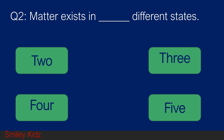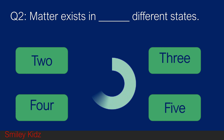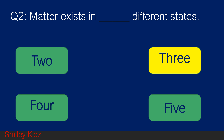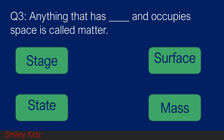Question number 2. Matter exists in blank different states. Option A 2, option B 3, option C 4, and option D 5. Your time starts now. And your time is up. The right answer is 3. Matter exists in 3 different states.